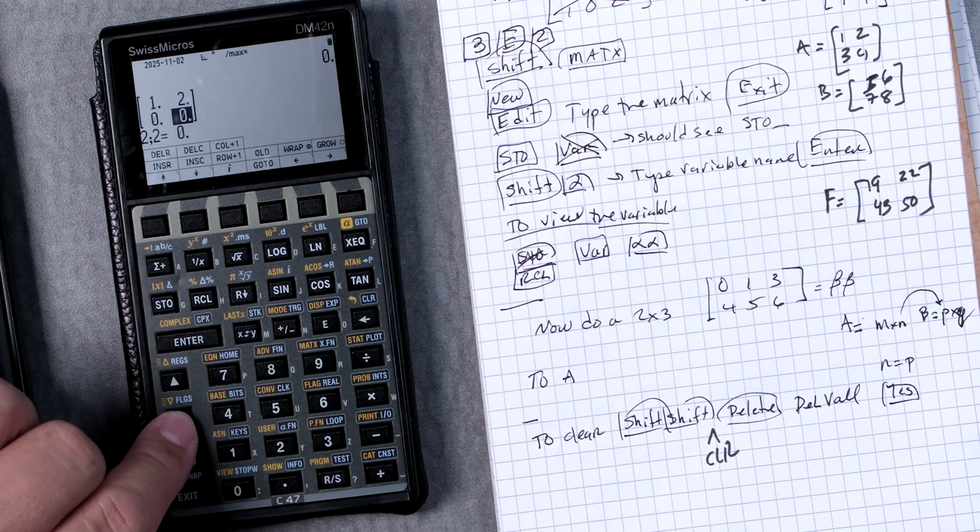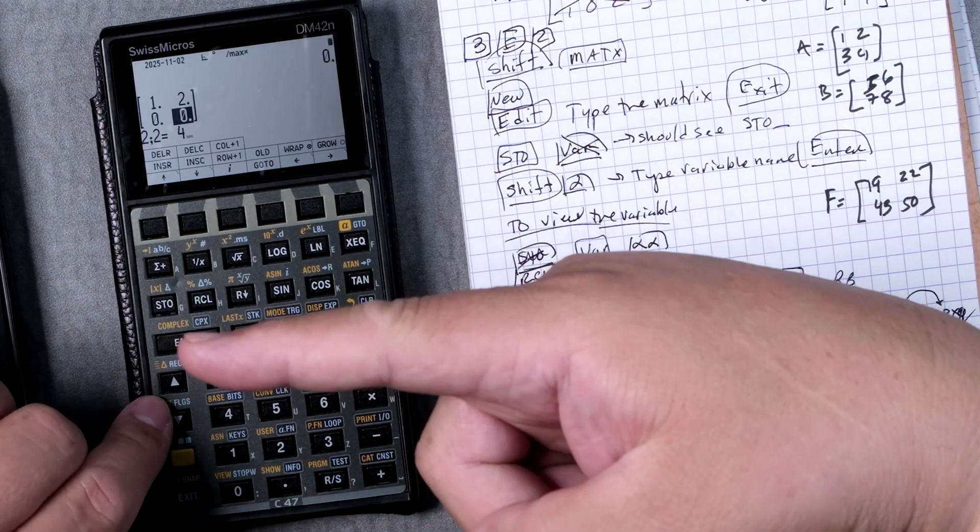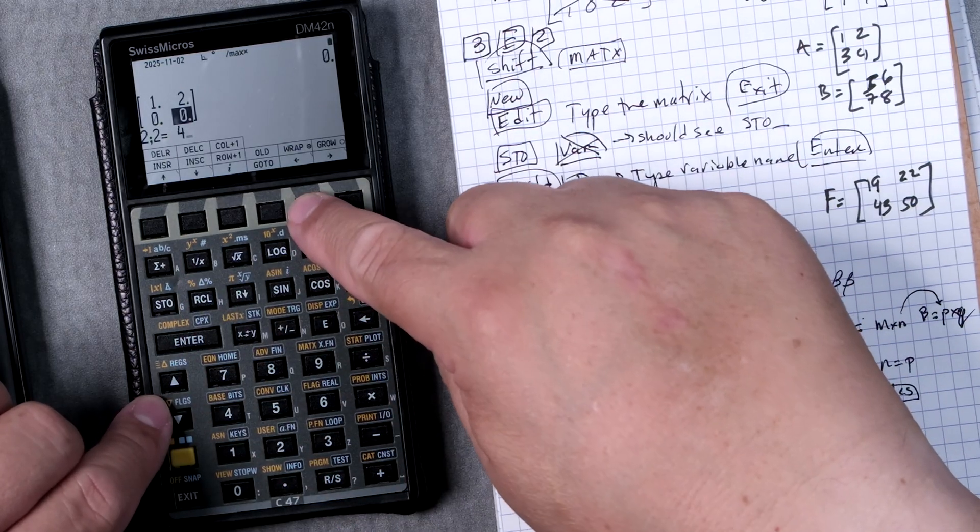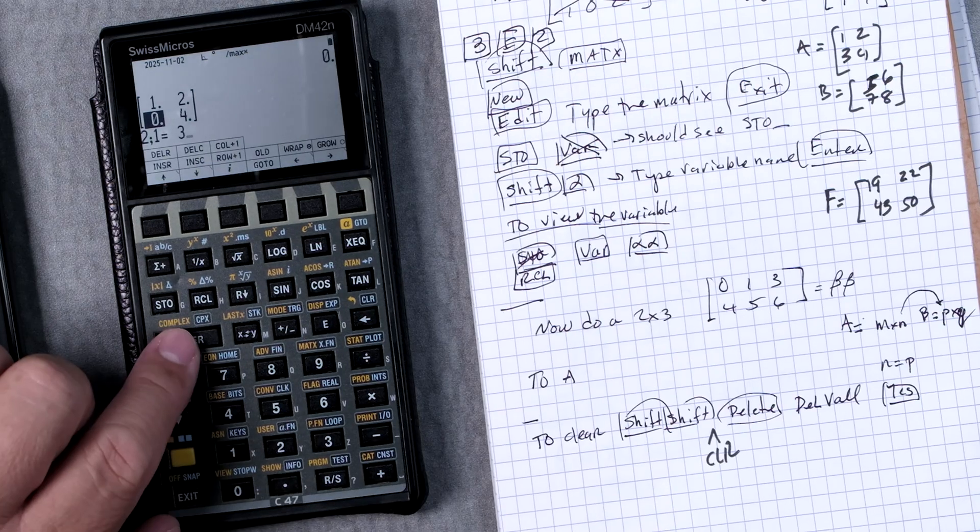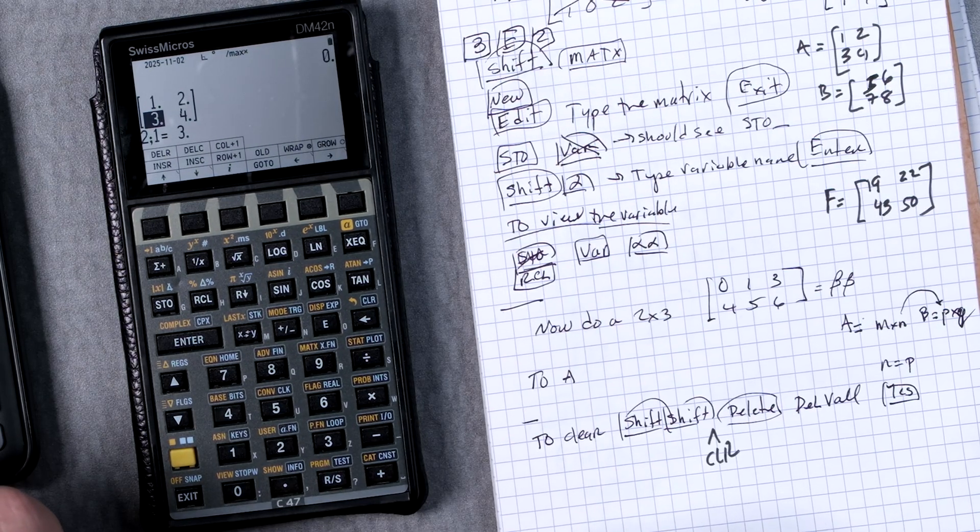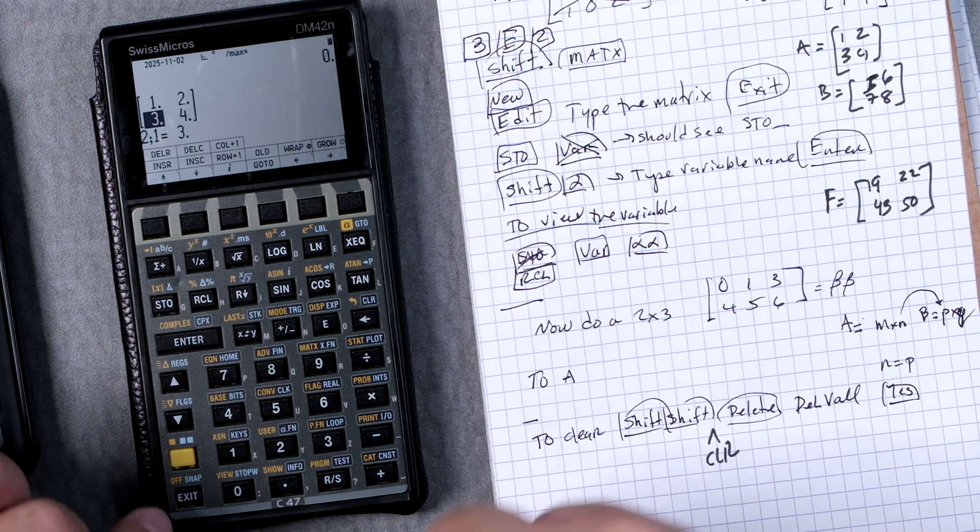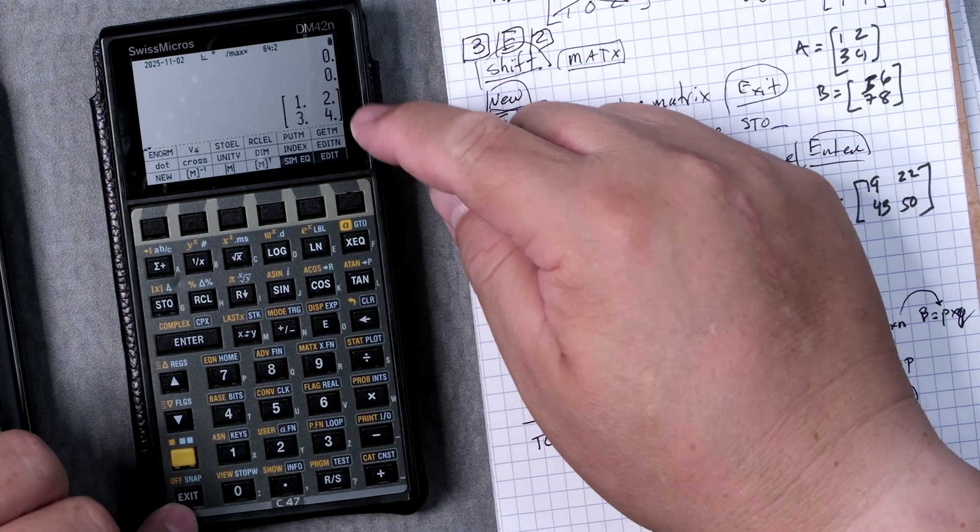So we can go down and I'm going to put four. Now I want to move over. I didn't press enter. Let's see if it puts it there. Yeah, see it does. And then three. We can press enter. So one, two, three, four. Now I want to get out of this edit mode. Press exit and now you have it here.